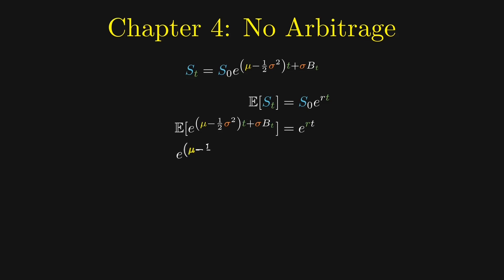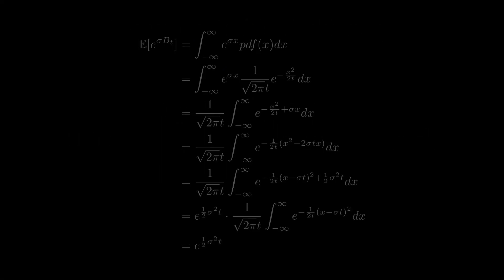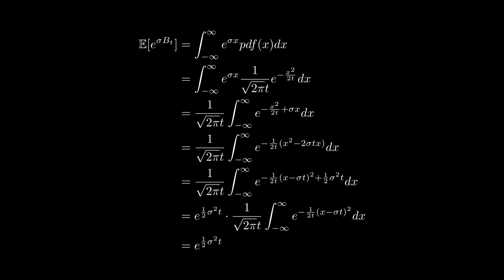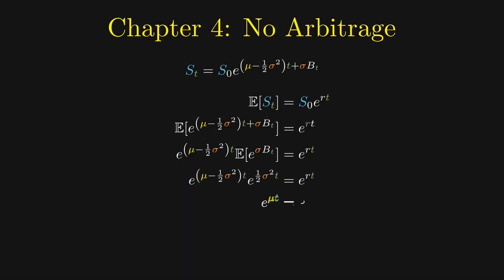When we expand it out, we encounter this term: the expectation of e to the power sigma times B_t. Recall that B_t follows a normal distribution, so we can use the moment generating function of a normally distributed variable to calculate this term. We put B_t into x, mu equals zero, and sigma squared equals t. Then we replace u with sigma. For those not familiar with moment generating functions, here are the steps to calculate this quantity without using moment generating functions. Feel free to pause and ponder. Finally, we get mu equals r for a stock.